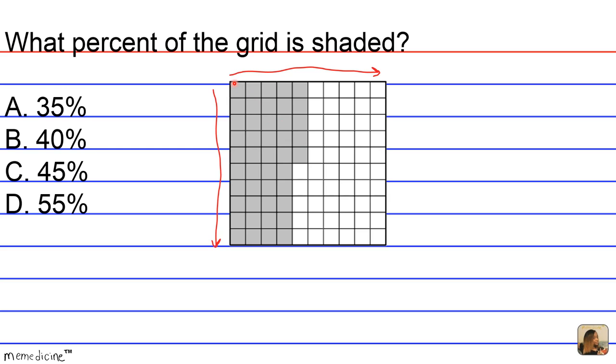If vertically down is 10 boxes, that means we can count 1, 2, 3, 4 going across. So this would represent 40 out of 100, or 40%. So we can eliminate answer choice A.